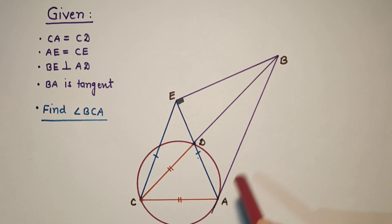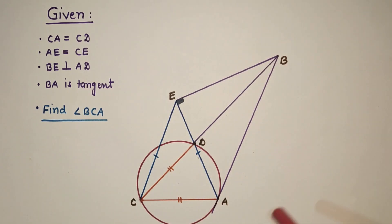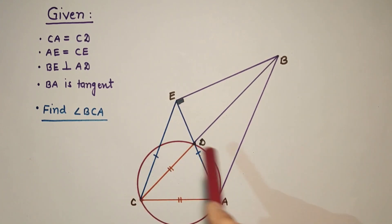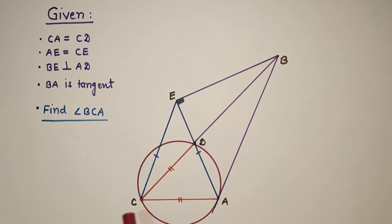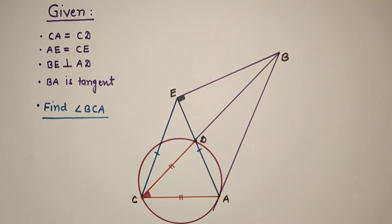We are given a triangle ABC such that angle BAC is more than 90 degrees. BA is a tangent and touches the circle at point A. We are given that CD is equal to CA, AE is equal to CE, and BE is perpendicular to AD produced. We have to find the value of angle BCA.